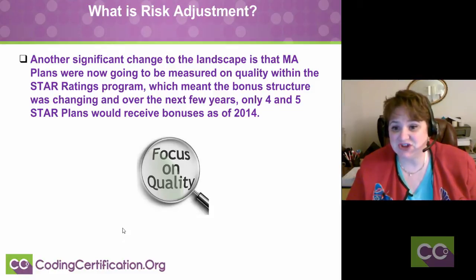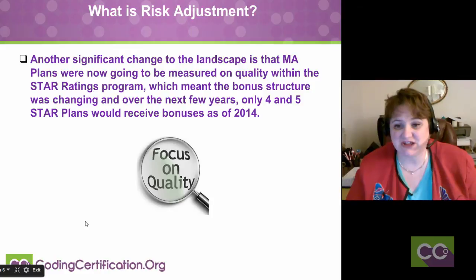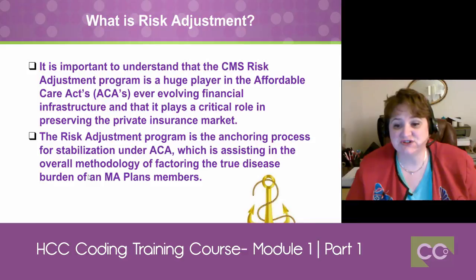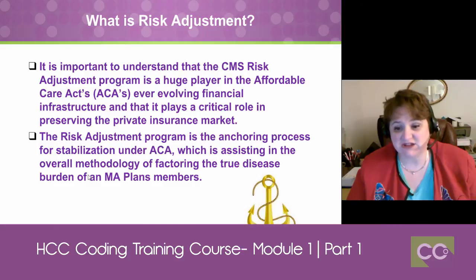Another significant change in the landscape is that the MA plans were now going to be measured on quality within the star ratings program, which meant the bonus structure was changing, and over the next few years, only four and five star plans would receive bonuses as of 2014. It's important to understand that the CMS risk adjustment program is a huge player in the Affordable Care Act's ever-evolving financial infrastructure, and that it plays a critical role in preserving the private insurance market. The risk adjustment program is the anchoring process for stabilization under the ACA, which is assisting in the overall methodology of factoring the true disease burden of an MA plan's members.